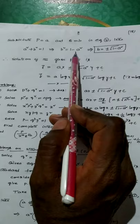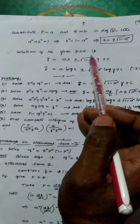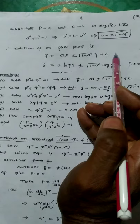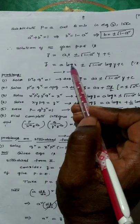In the second step, we take capital P = a and capital Q = b. Substituting in equation 4 gives a² + b² = 1, so b = ±√(1 − a²). Substituting in the complete solution: z = a·X ± √(1 − a²)·Y + c. Finally, substituting X = log x and Y = log y gives z = a·log x ± √(1 − a²)·log y + c. This is the complete solution of the given PDE.